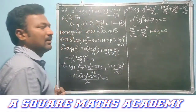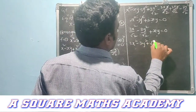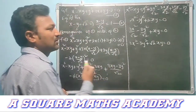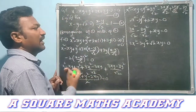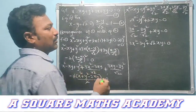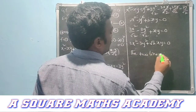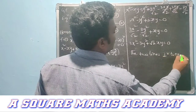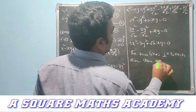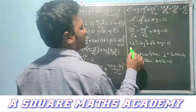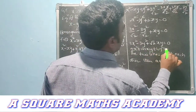After simplification we get: 3x² − 3y² + 2√2·xy = 0. For the two lines represented by ax² + 2hxy + by² = 0 to be perpendicular to each other, the condition is a + b = 0.